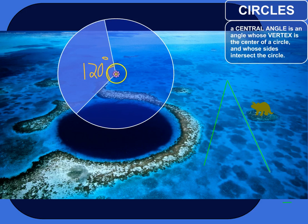So the vertex of the angle is the center of this circle, and the sides intersect with the circle. So they come out, boom, intersect.